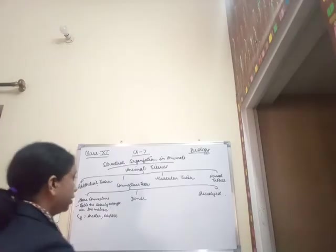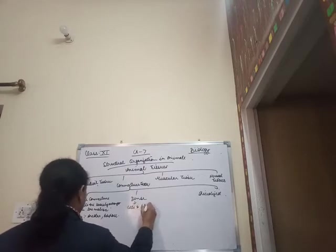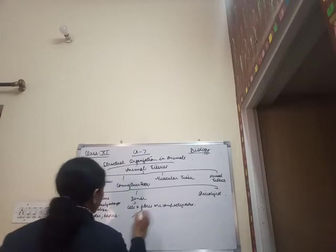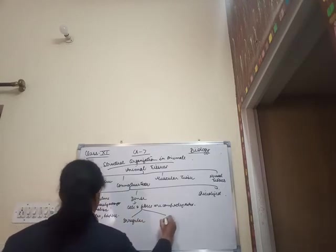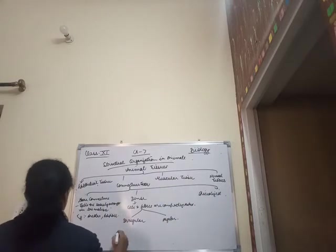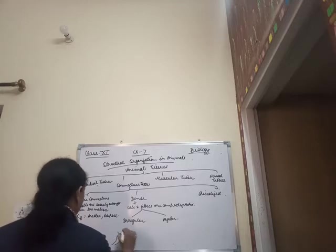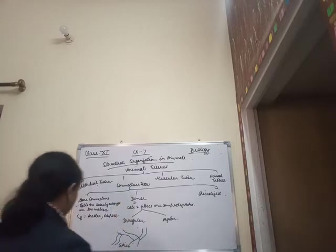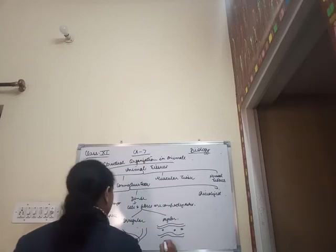In dense connective tissue, the cells and fibers are compactly packed. It can be further divided into dense irregular and dense regular types. In dense irregular connective tissue, the fibers are arranged in an irregular pattern — for example, as found in the skin. In dense regular connective tissue, the fibers and fibroblasts show a regular orientation, and it is present in tendons and ligaments.